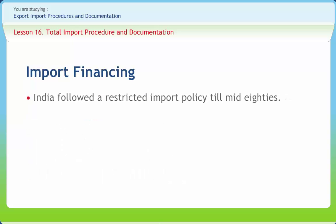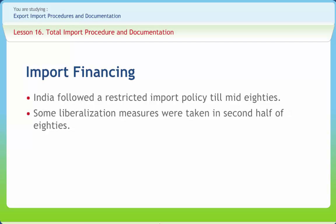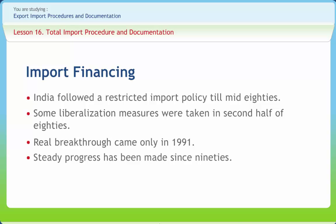India followed a restricted import policy till the mid-80s — nothing could be imported without a license, involving cumbersome procedures and intricate documentation. Although some liberalization measures were taken in the second half of the 80s, a real breakthrough came only in 1991. Steady progress was made in the 90s in replacement of quantitative restrictions, licensing, and discretionary control over imports by deregulation, simplification of procedures, and protection through tariff and exchange rates. Export-Import Policies of 1992–97 and 1997–2002 were the steps in this direction.